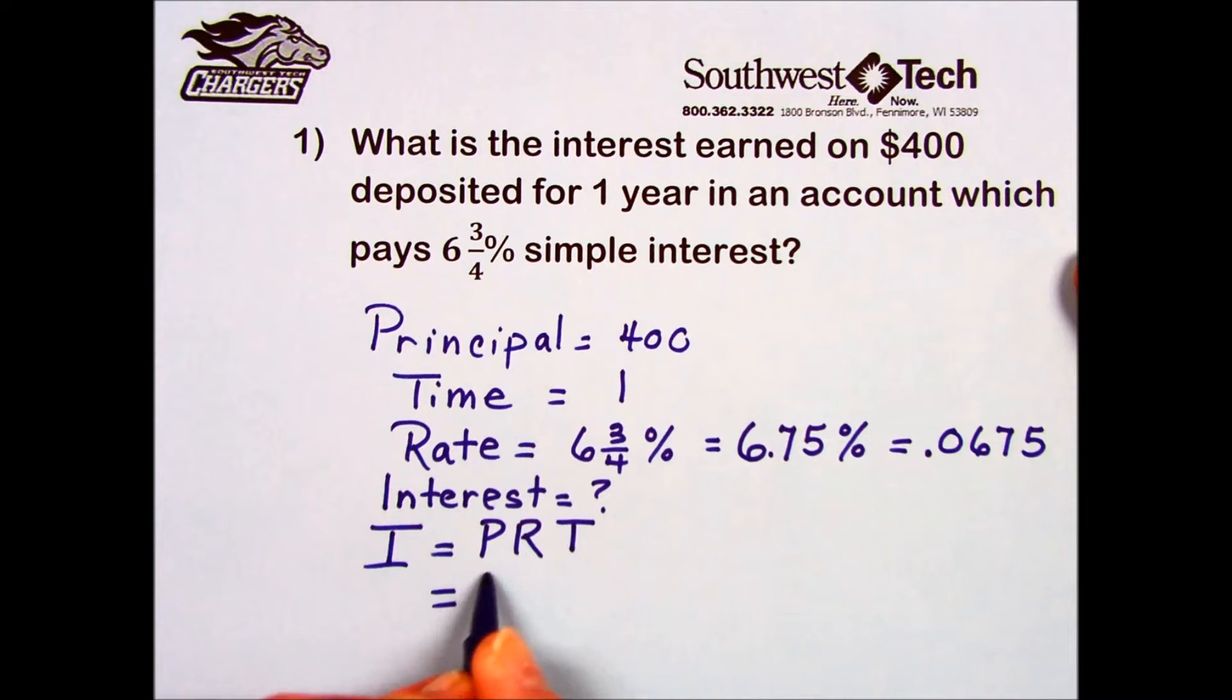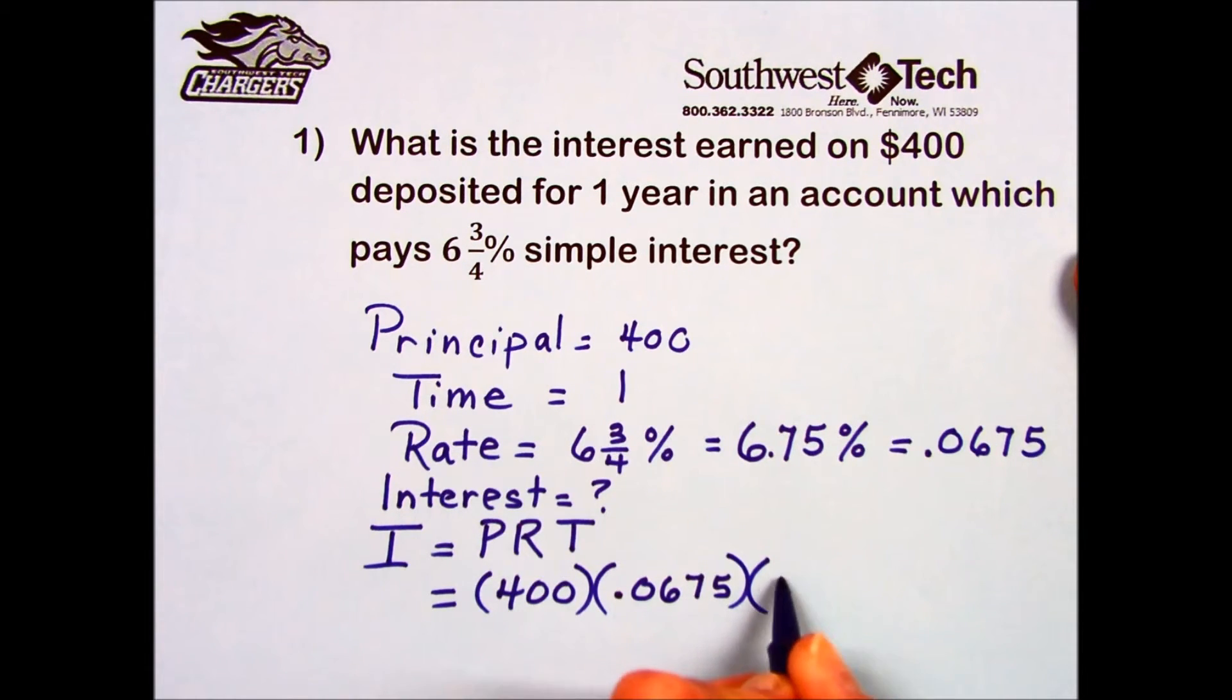Replacing those values with the numbers from the problem, we have a principal of 400 times the rate expressed as a decimal times the time in years, which was one year.